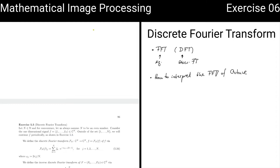We start with a one-dimensional signal which we call F, an element of the complex numbers to the N — so it's just a vector of complex numbers: F ∈ ℂ^N. This is our discrete signal, and we assume we continue F periodically outside the index set 1 to N, which is something you already know from last week's convolution exercises.